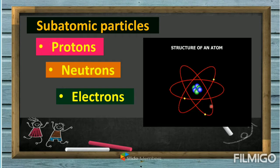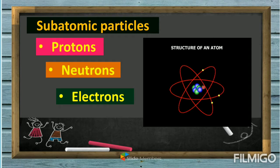In the structure of an atom, the valence shell electrons are the ones roaming around the outside — those are the electron particles. Inside of an atom is called the nucleus, and inside the nucleus are the protons and the neutrons. The particles that move around the electron shells are called electrons.